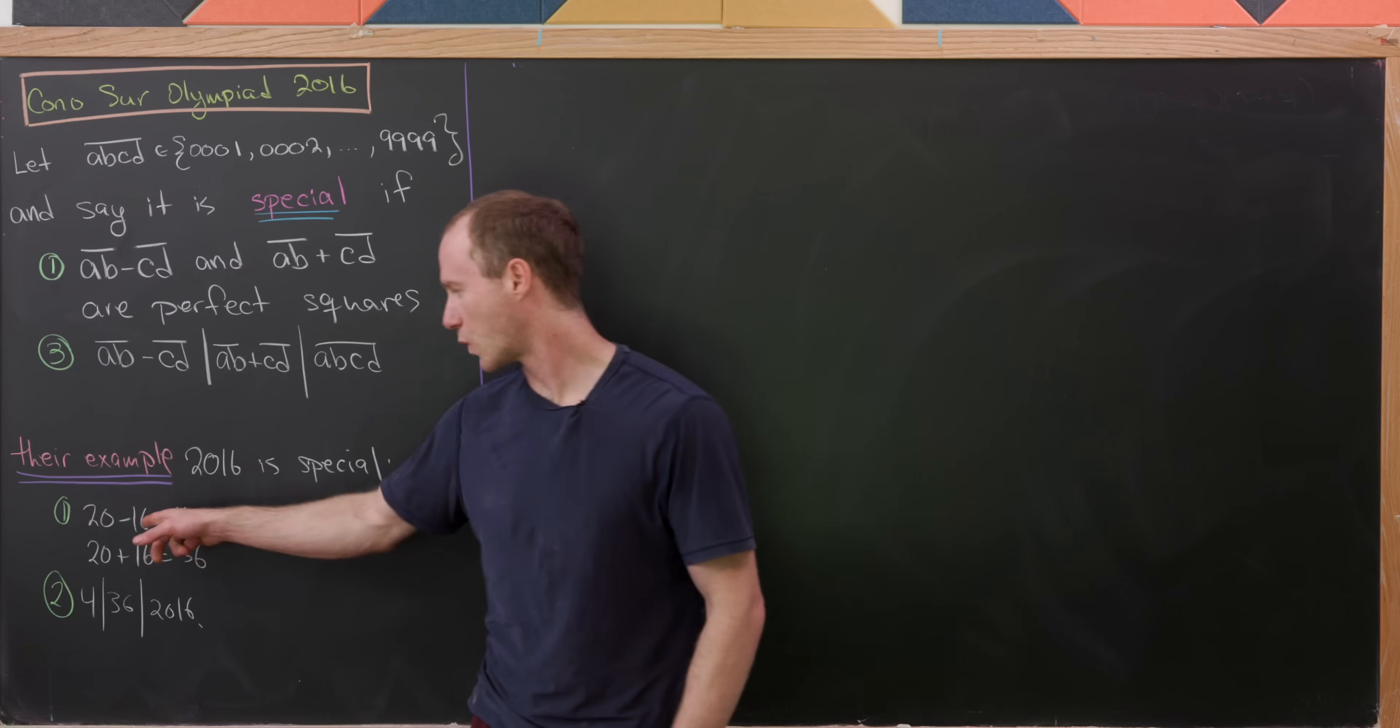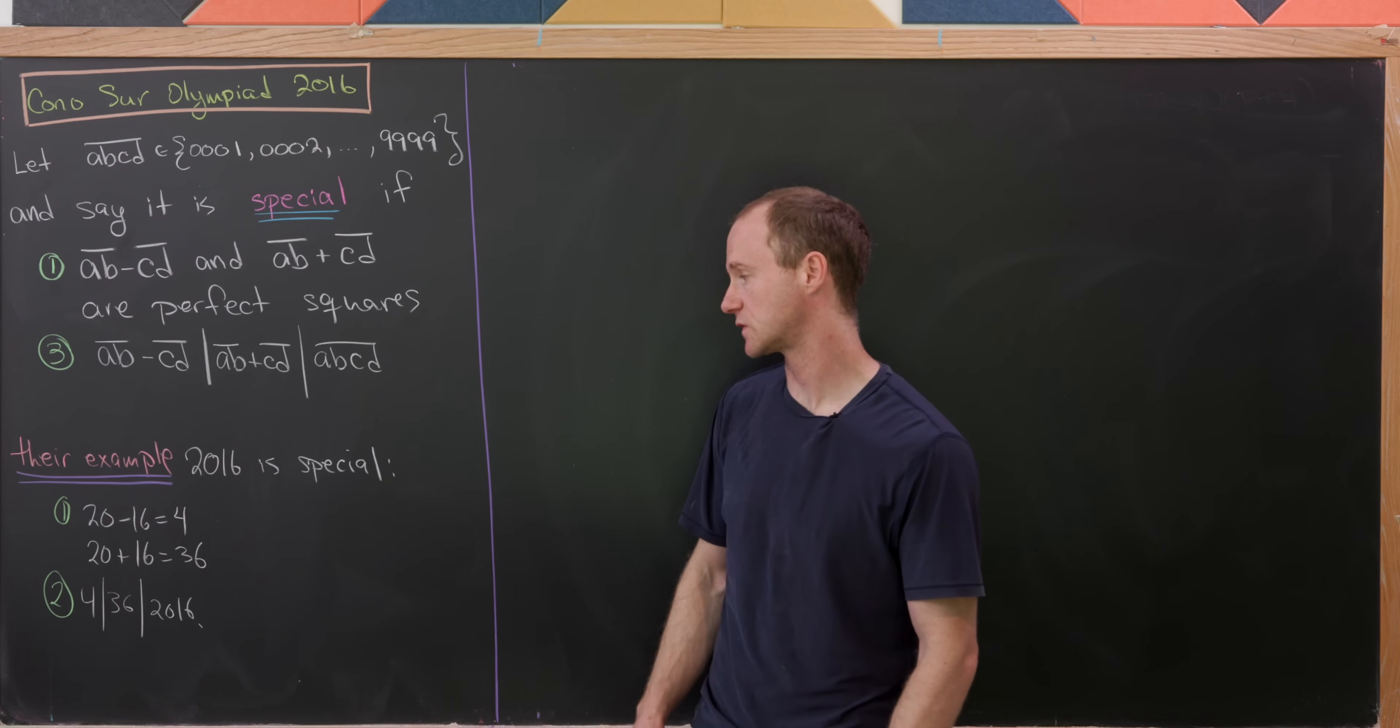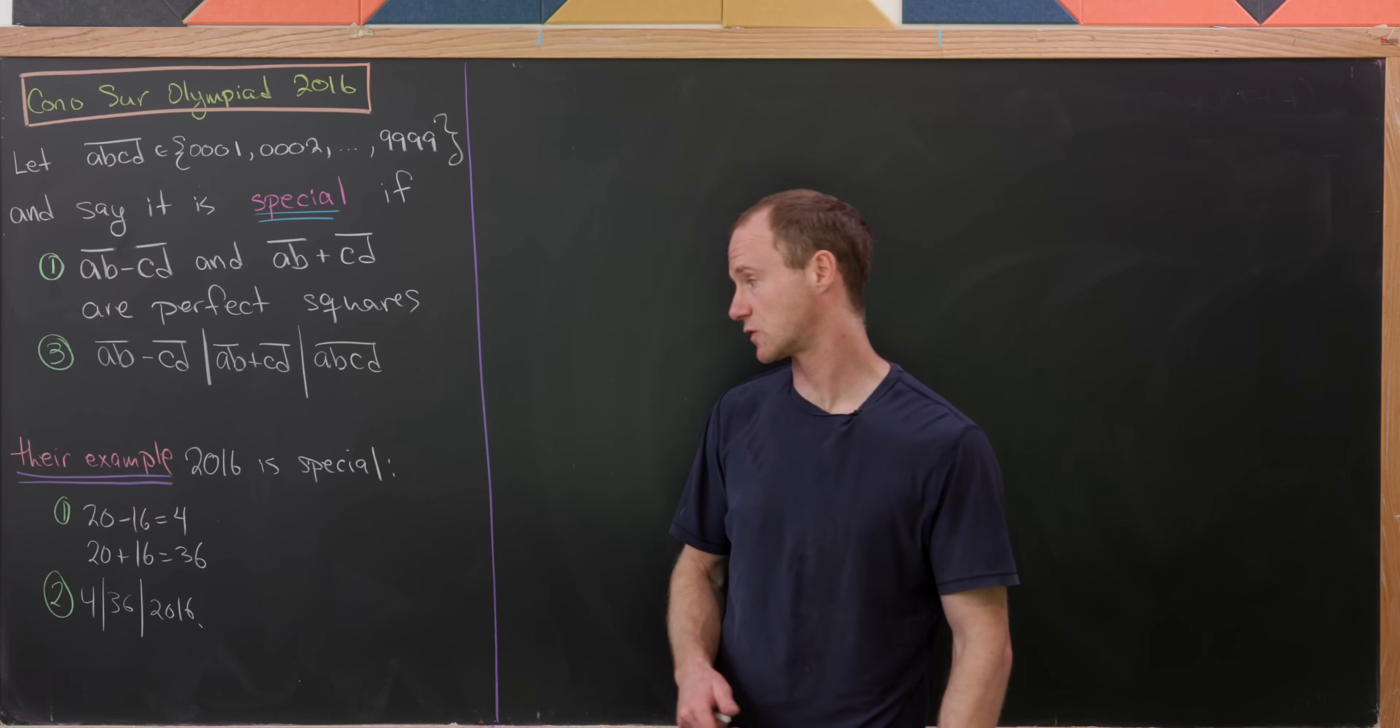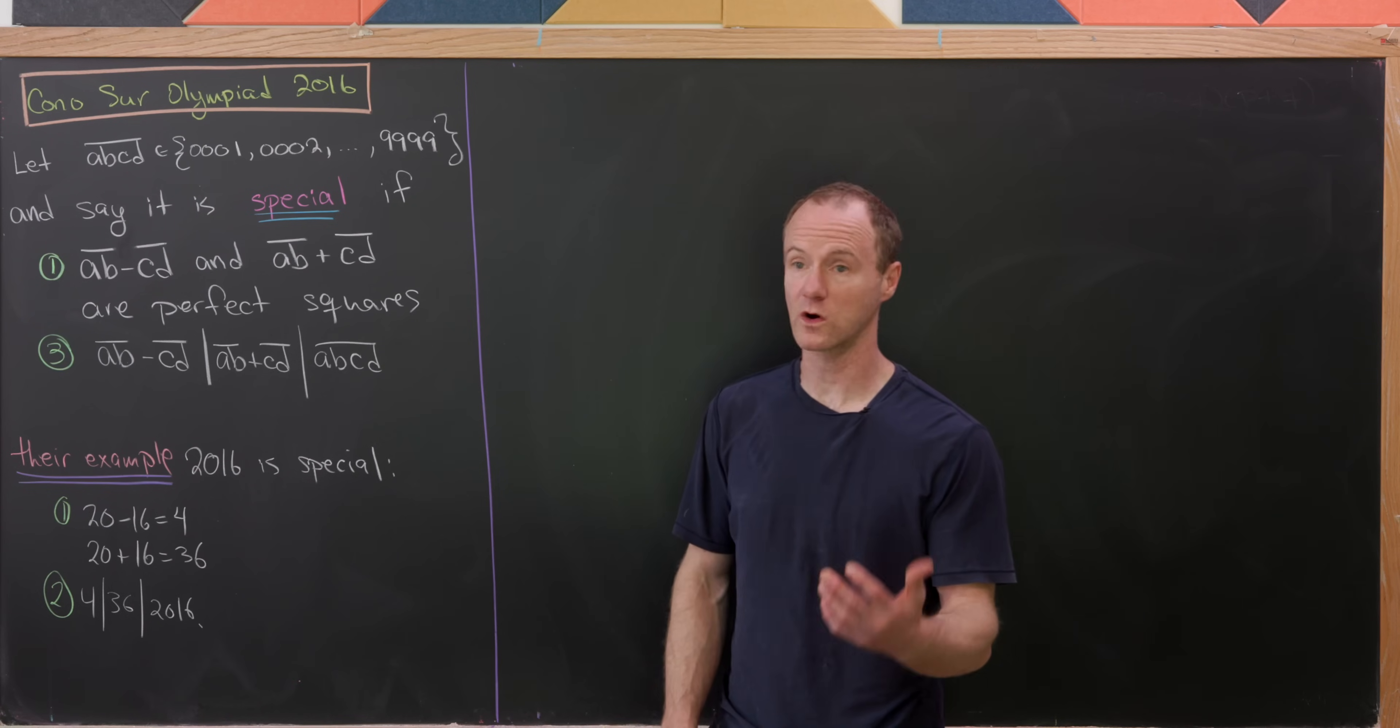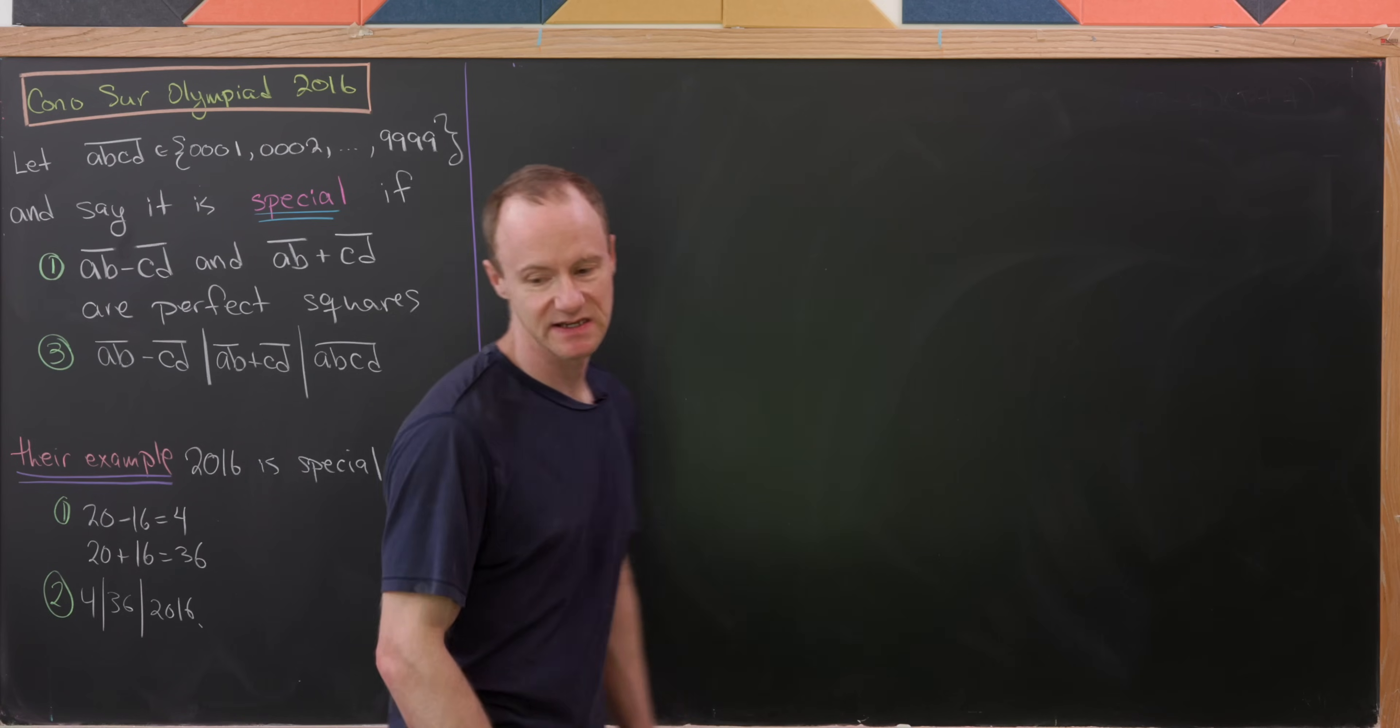Let's observe that 20 minus 16 is 4, a perfect square. 20 plus 16 is 36, 6 squared. And 4 divides 36, and 36 divides 2016. So let's get to it.